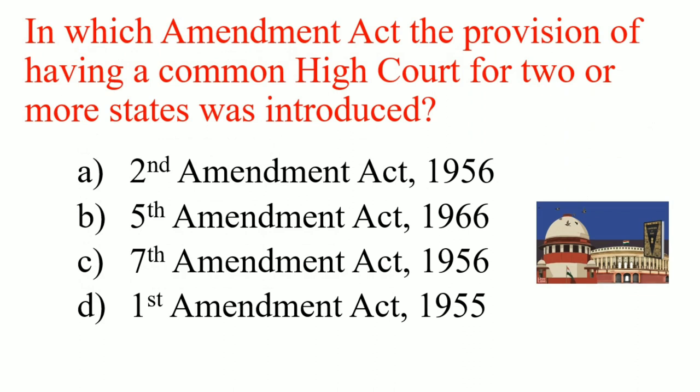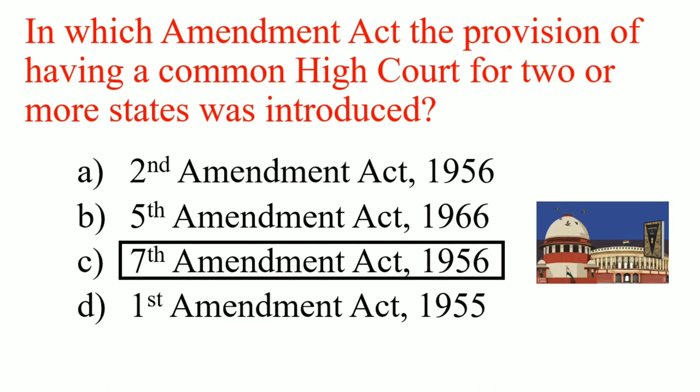In which amendment act was the provision of having a common high court for two or more states introduced? Answer: 7th amendment act 1956.